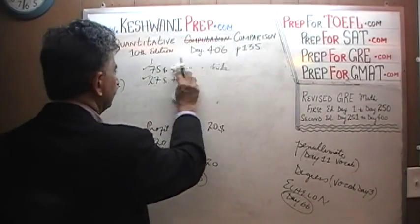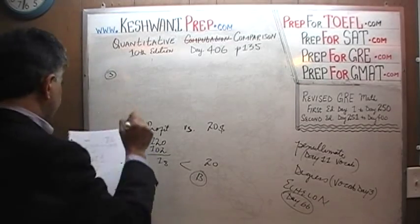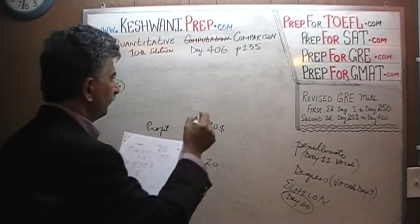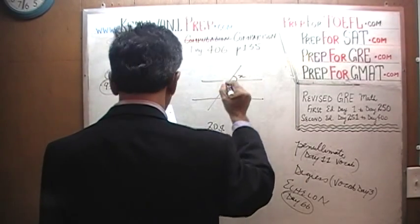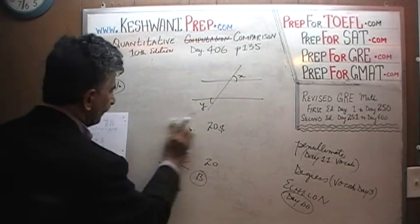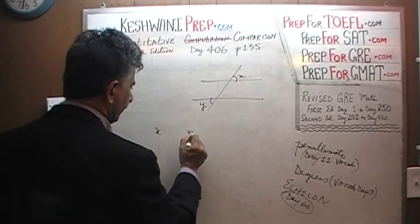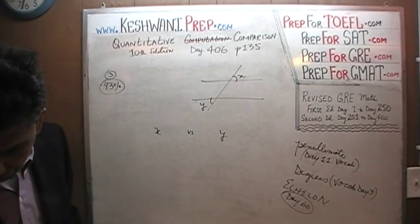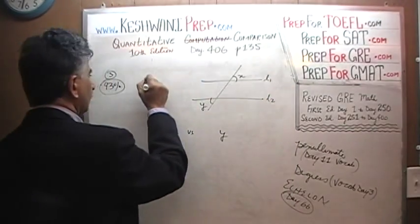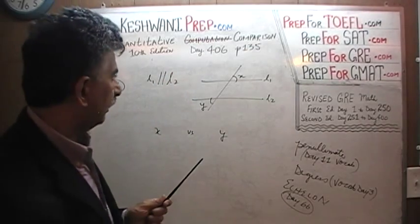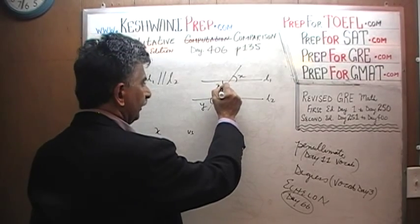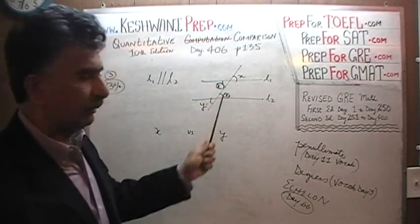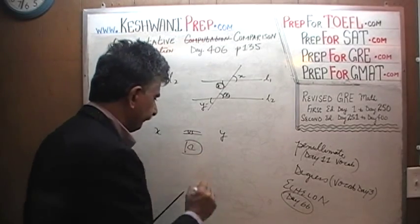Number 3 is a geometry question. Again, 93% of the people had no problem with it. We are given two parallel lines and told that this is angle X and this is angle Y. We are asked to compare X versus Y. Since we are told that L1 is parallel to L2, if this is X, this angle is also going to be X because these are opposite angles. And since this angle is X, the next one is also X. X and Y are equal to each other because they are opposite angles. The answer is C.